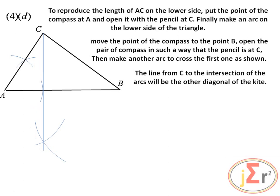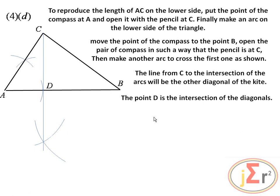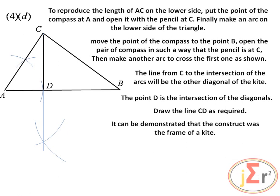It is the frame of the kite that we need to manipulate in order to get point D, such that CD is perpendicular to AB. We are not required to draw the kite — just understand that it is the frame we are manipulating. It can be demonstrated that the construct is the frame of the kite, but that would not be included in an examination. We are showing this only for student understanding.